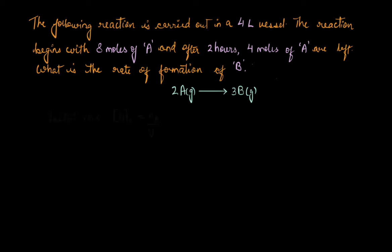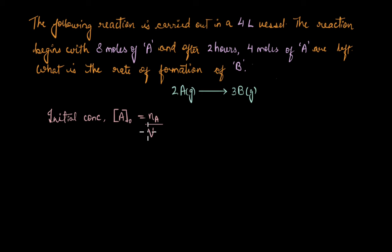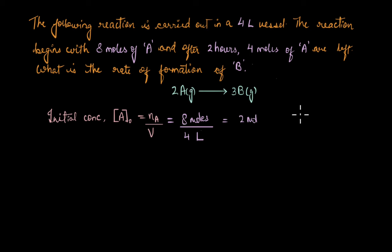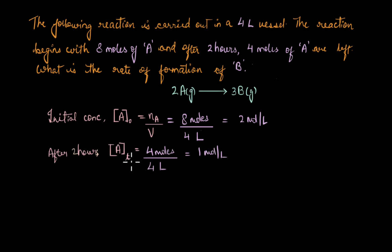Now from the information given in the question, the initial concentration of A — A-naught — equals the number of moles of A divided by the volume of the vessel, which is 8 moles divided by 4 liters, giving 2 moles per liter. After 2 hours, the concentration A_T equals 4 moles divided by 4 liters, which is 1 mole per liter.